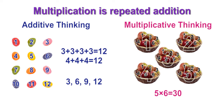Students who are using additive thinking would add 6 plus 6 five times for a sum of 30. Students must be able to think multiplicatively, or to use proportional reasoning, as they learn about ratios and use them in situations involving shrinking, enlarging, and scaling.